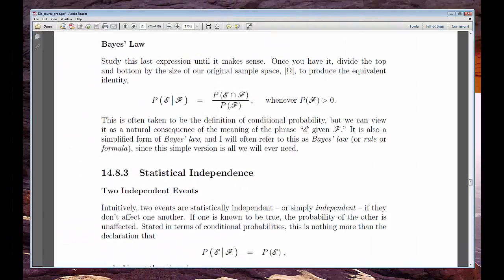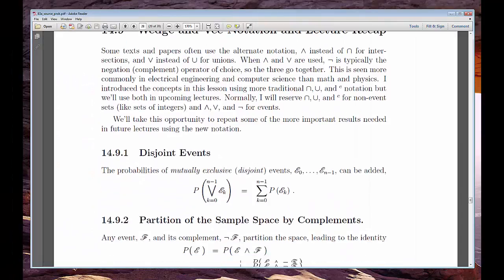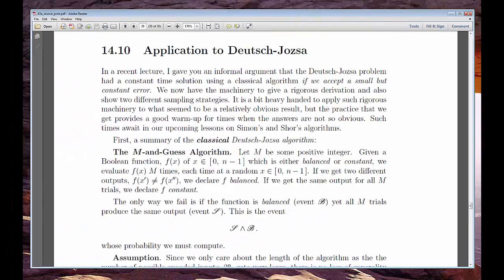Those theorems bring us to the concept of statistical independence and a powerful tool called Bayes' Law. We'll see some alternate notation for unions and intersections, and then bring it all to a boil by applying everything to one of our past algorithms, Deutsch-Josza.